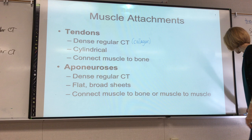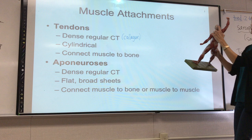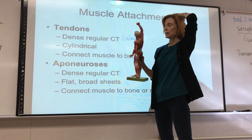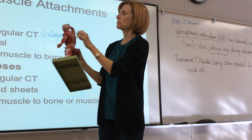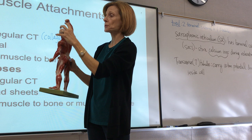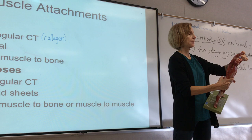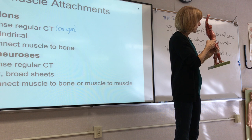This is an aponeurosis here on the top of the head — this is actual connective tissue, not just the skull. It's called the epicranial aponeurosis. 'Epicranial' means on top of the head, and it connects the frontalis muscle over the eyebrows to the occipitalis muscle over the occipital bone. These two muscles work together to move the scalp and raise the eyebrows. There is also an aponeurosis in the abdominal region where the external oblique inserts.